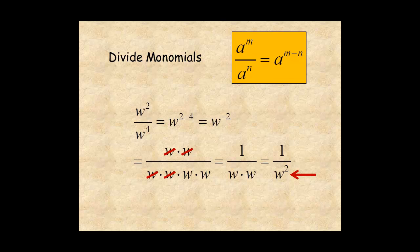Apparently, w to the power of negative 2 is equal to 1 over w to the power of positive 2. An interesting result.